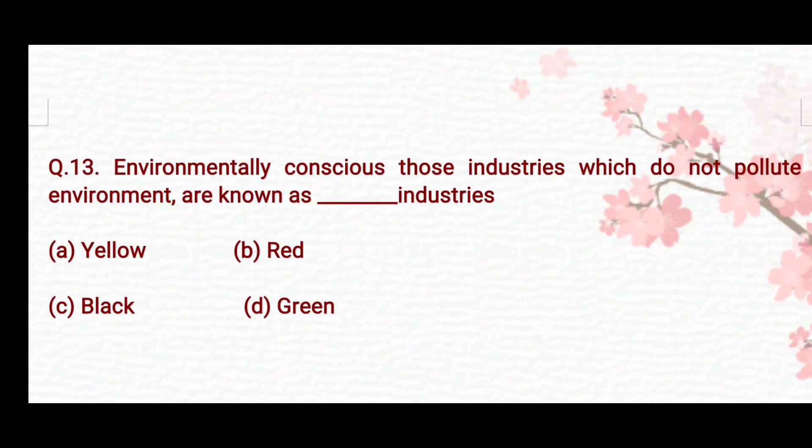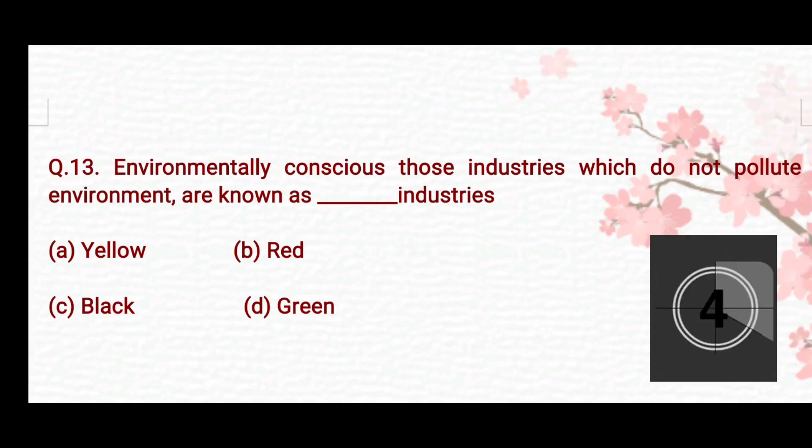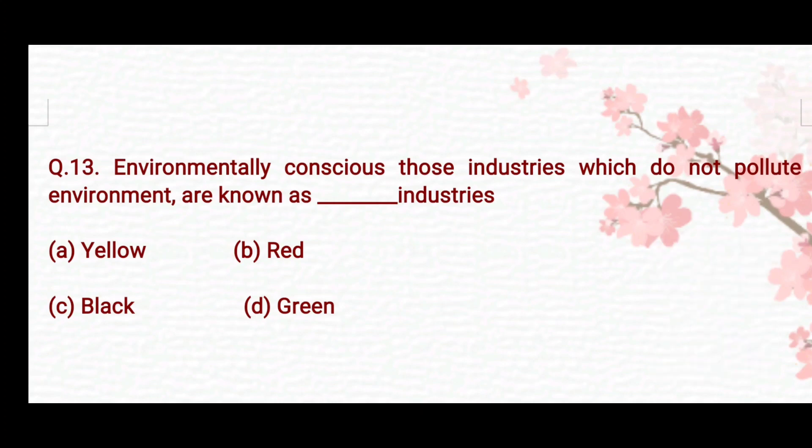Environmentally conscious — those industries which do not pollute environment are known as dash industries. Options are: Option A: yellow. Option B: red. Option C: black. Option D: green. The right answer is Option D — green.